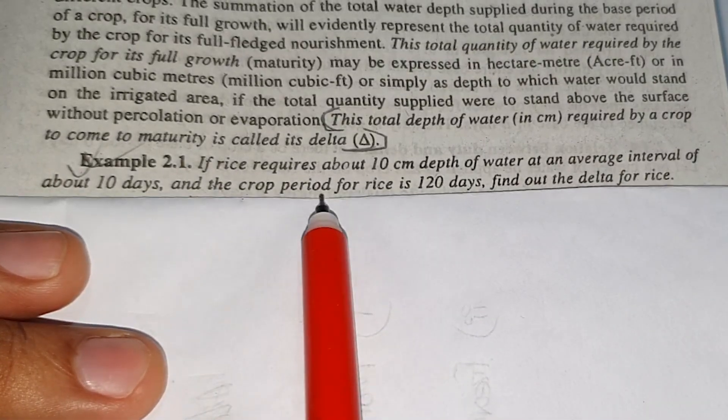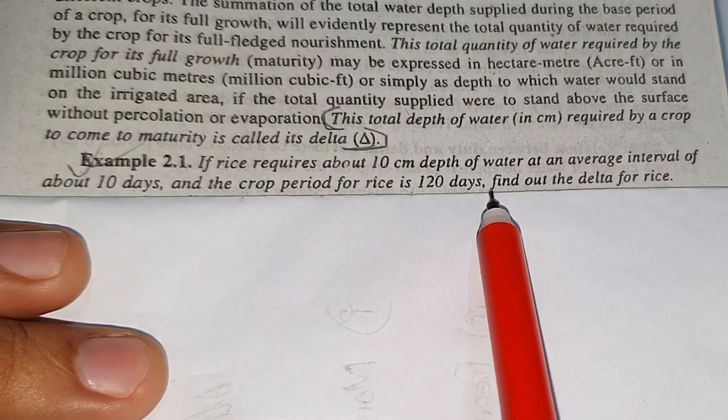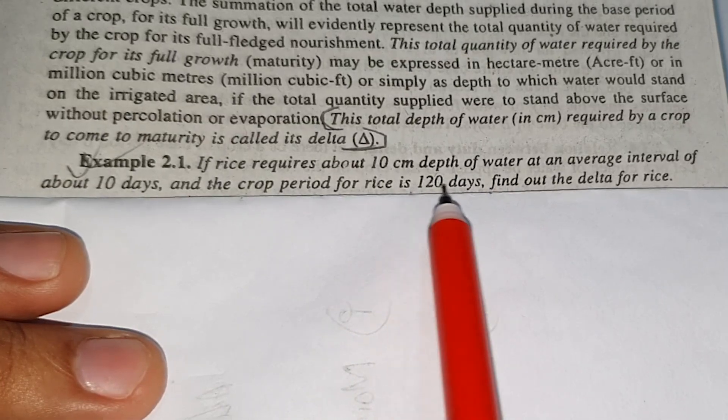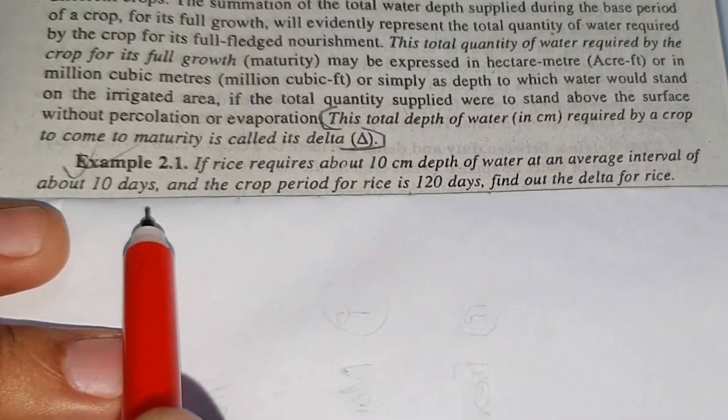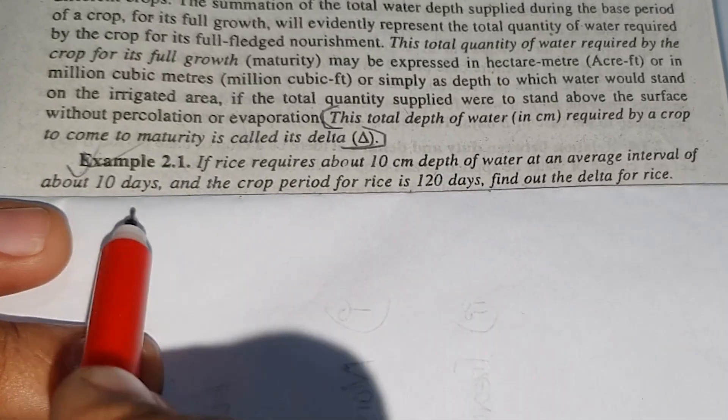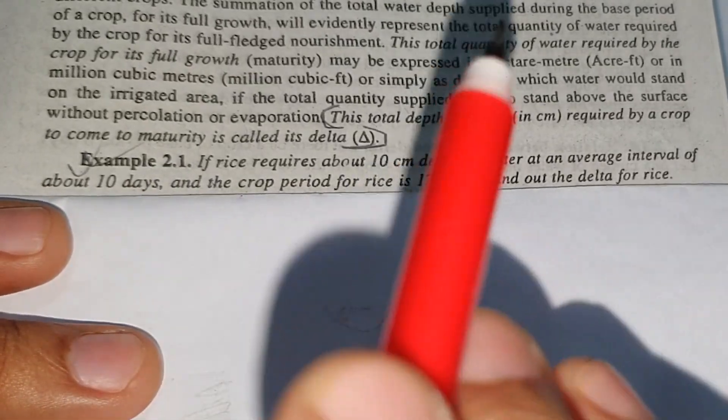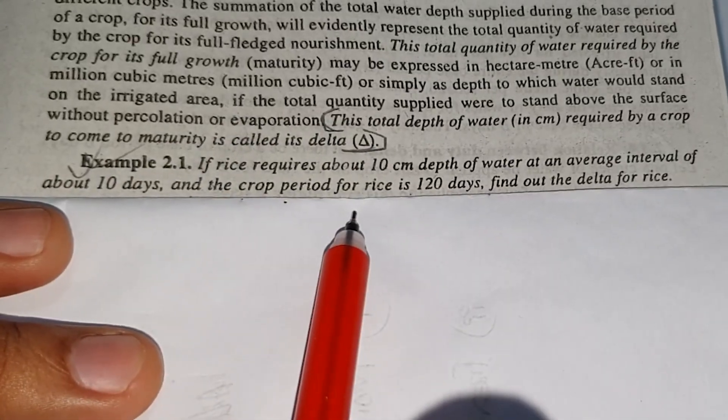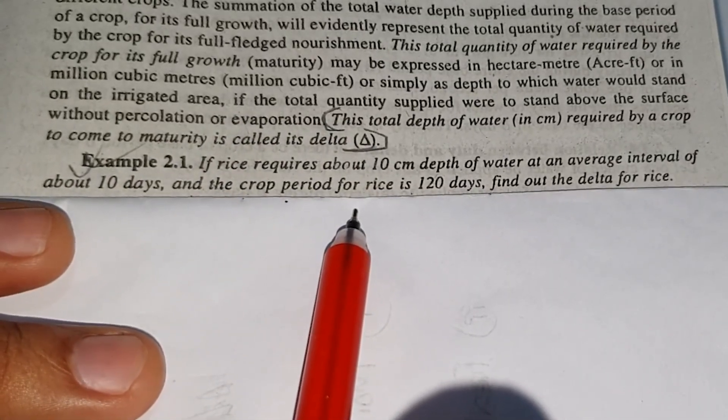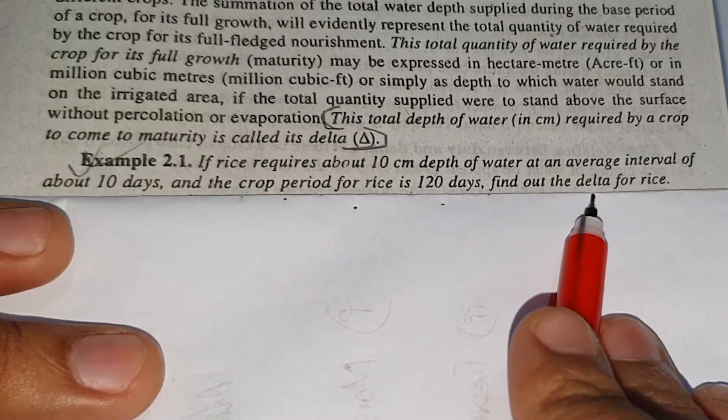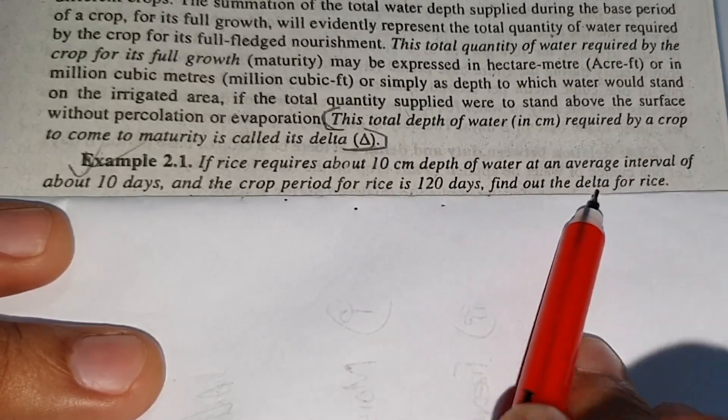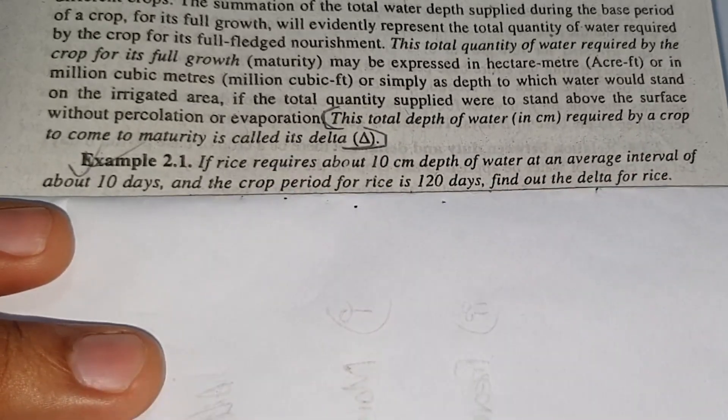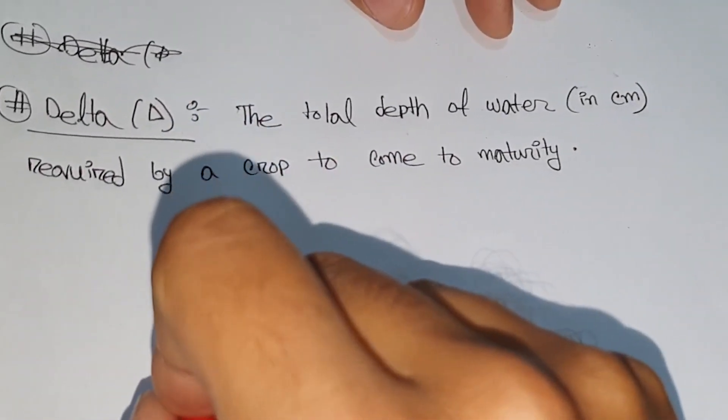This rice crop requires about 10 cm depth of water. Depth of water is 10 cm at an average interval of 10 days. The depth of water is 10 cm. In the base period, we will find the delta. We know about delta and base period, so we are going to be able to calculate the delta.